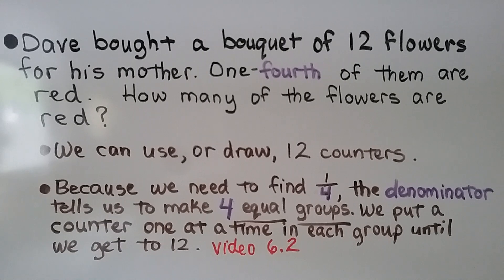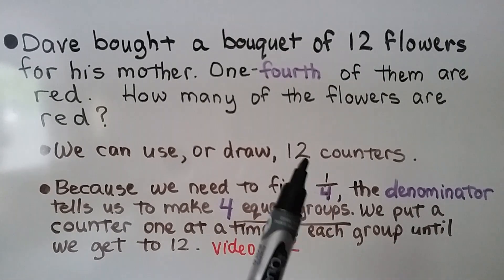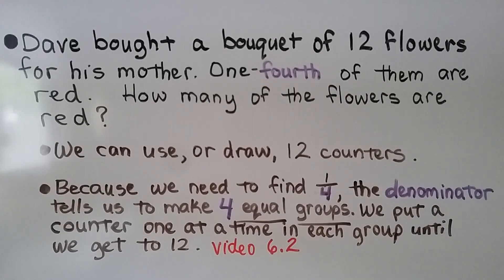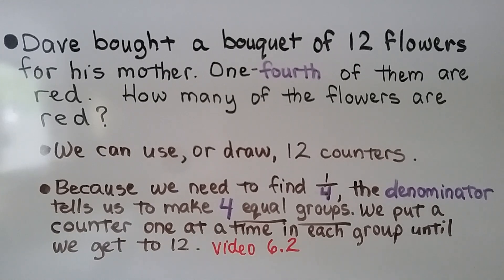Dave bought a bouquet of 12 flowers for his mother. One fourth of them are red. How many of the flowers are red? We can use or draw 12 counters for the 12 flowers. Because we need to find one fourth, the denominator tells us to make four equal groups. We put a counter one at a time in each group until we get to 12. We learned about making equal groups in Lesson 6.2, which is linked in the description if you need it.